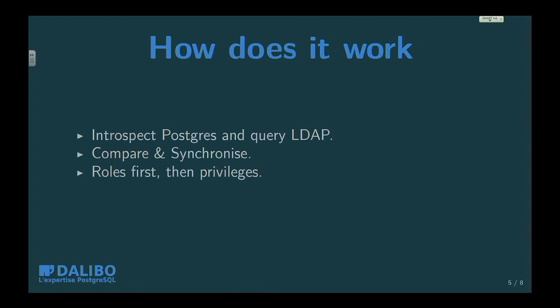The basic logic of LDAP2PG is a loop that introspects both Postgres and LDAP, so it's able to know if someone should not be in the system or is missing. Roles are created first so you can manage owners, and then synchronize privileges, grants, and revokes.